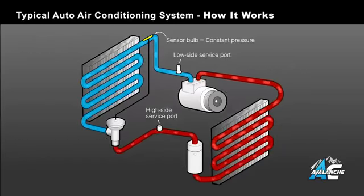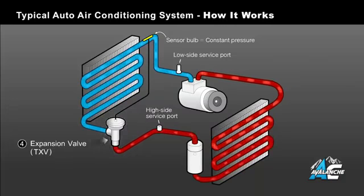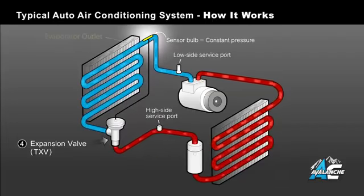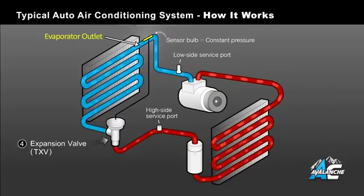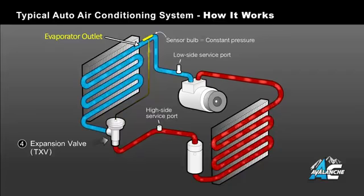A number of car manufacturers started using a thermal expansion valve, or TXV, to make the air conditioner operate more efficiently and give better cooling. The TXV system, as shown in our diagram, has a small temperature bulb located at the outlet of the evaporator, which continually adjusts the refrigerant flow through the expansion valve and into the evaporator based on the evaporator's temperature and pressure.